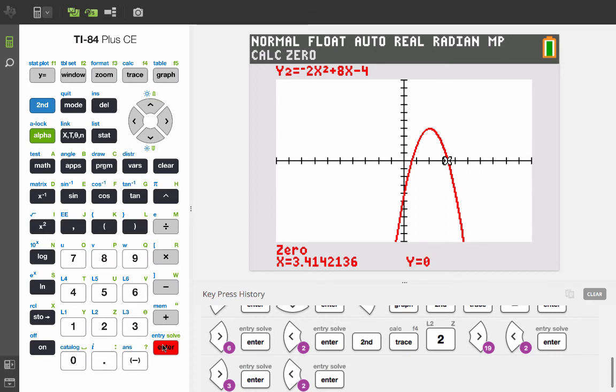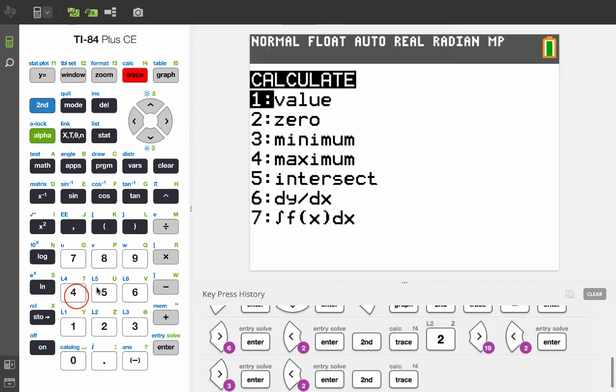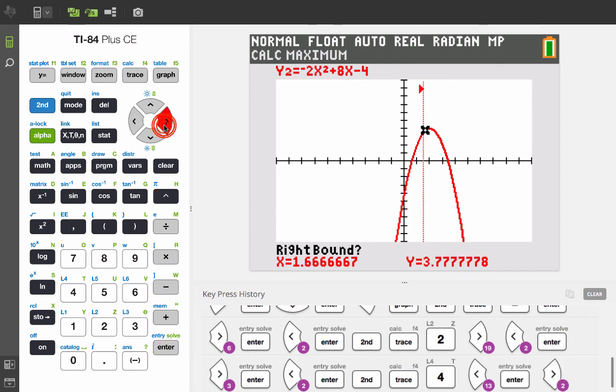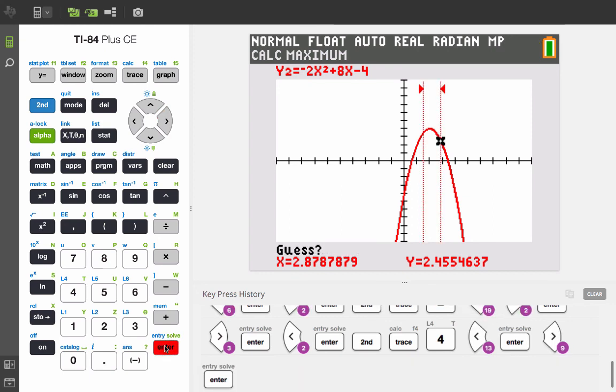Now, if we want to find the vertex on this one, we'll need to find the maximum. So we'll go to second calc, and we'll select number four, maximum. And once again, we'll move our left bound somewhere to the left of where we think the maximum is. Press enter. Move it somewhere to the right. Press enter. Move our guess a little closer. Press enter.